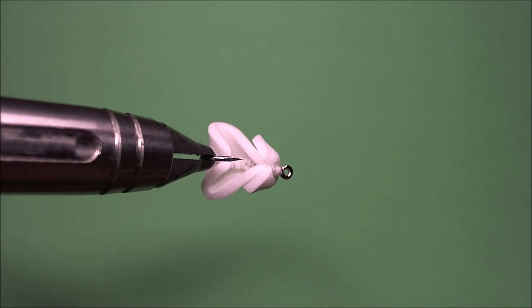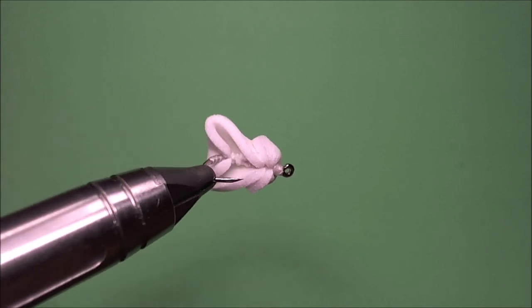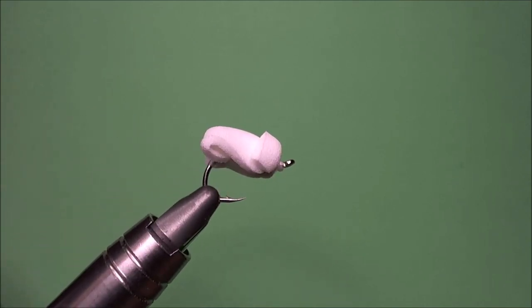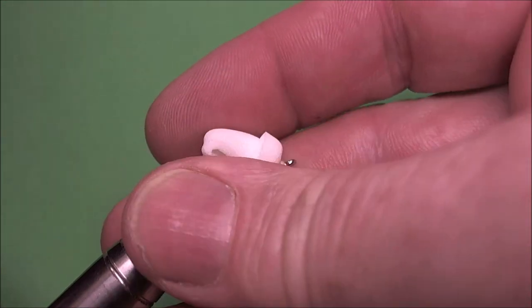This is the basic pattern. Two ingredients. Yarn and foam. There we go. So there's one ready tied. I'll tie one up and show you the magic to the ingredients.